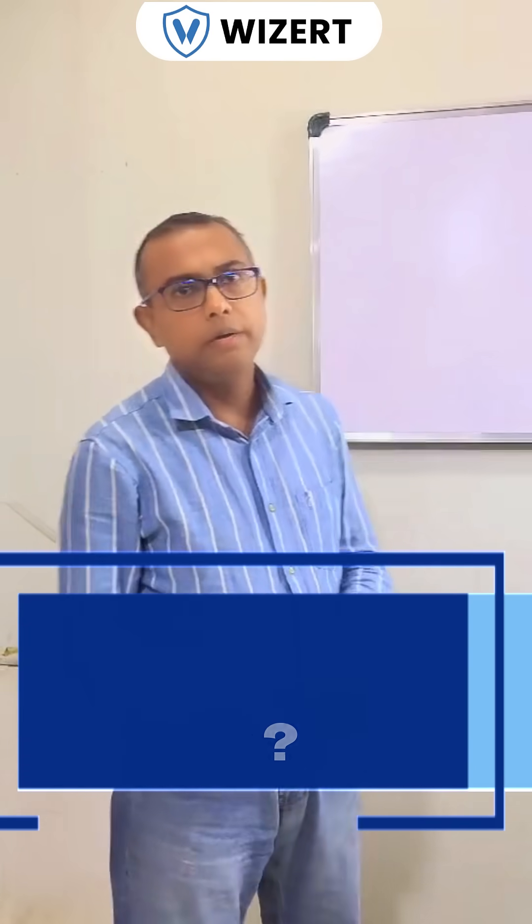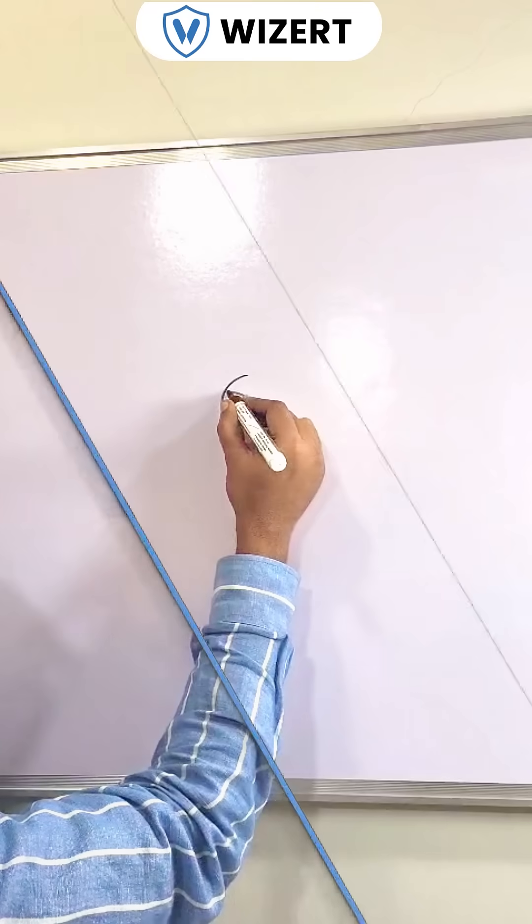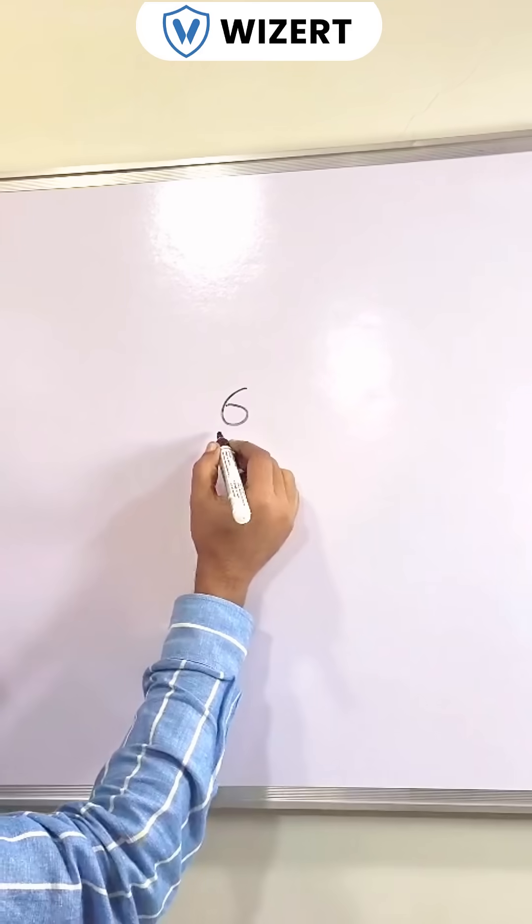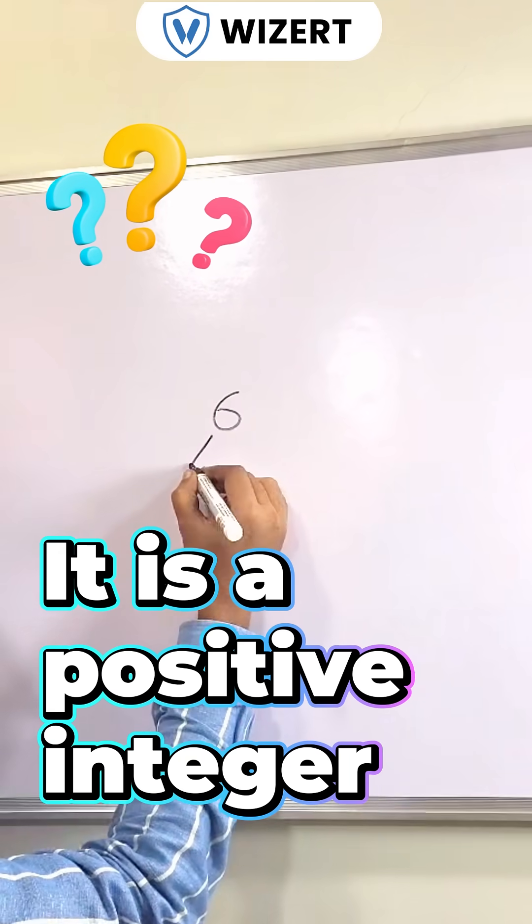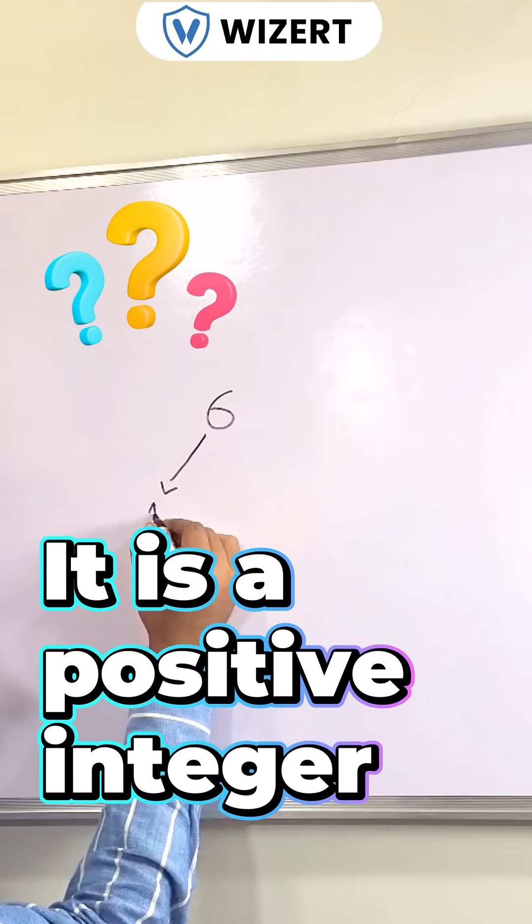But do you know what is a perfect number? Let us take an example: six. Now what are the factors of six? One, two, three, and six itself.